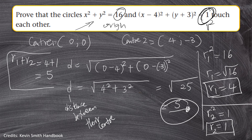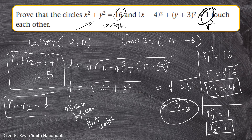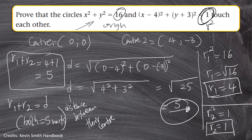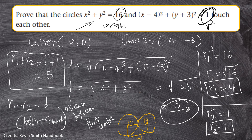Very interesting — we find that r1 + r2 = 5, and d = 5, so r1 + r2 equals d. What can we conclude? The two circles intersect, and since the distance between their centers equals the sum of their radii, we can deduce that these two circles are intersecting at one point. This proves that the two circles do indeed touch each other at one point.